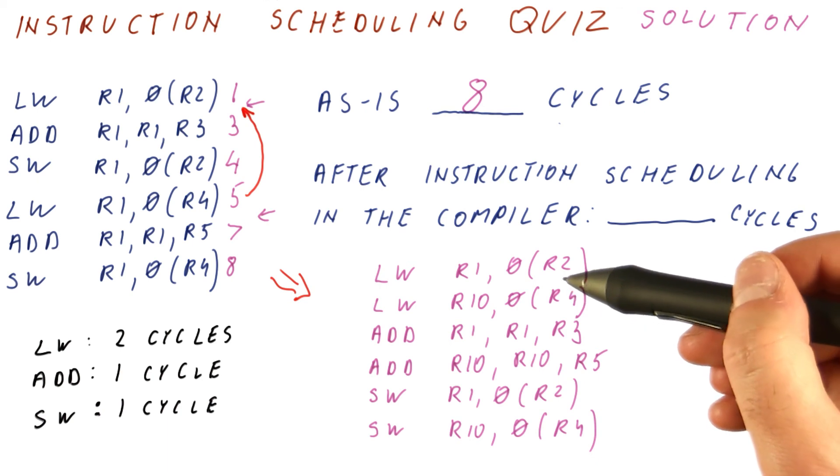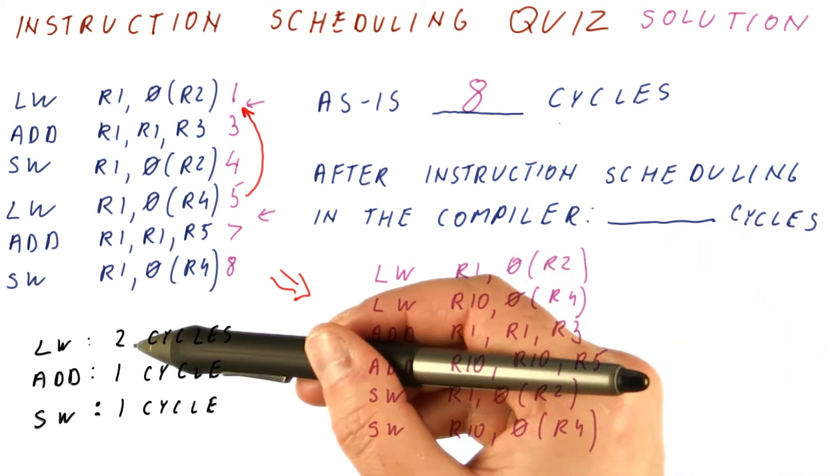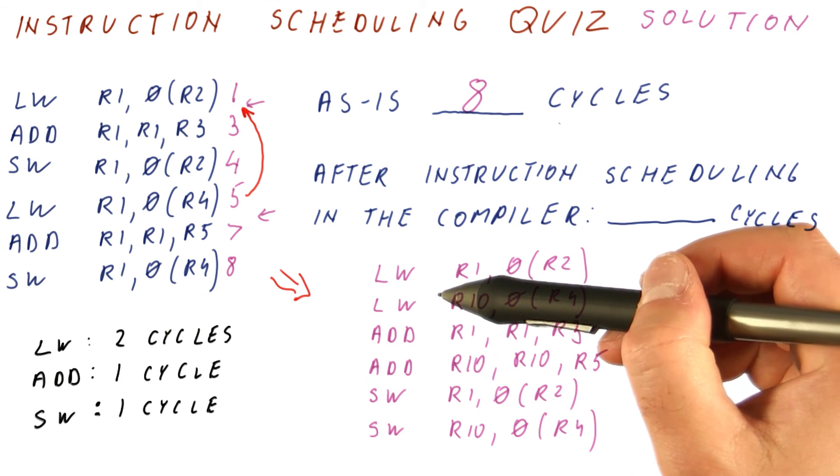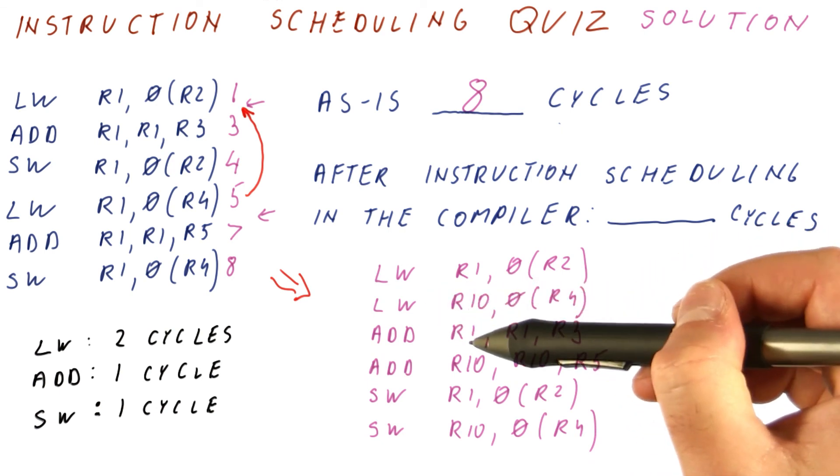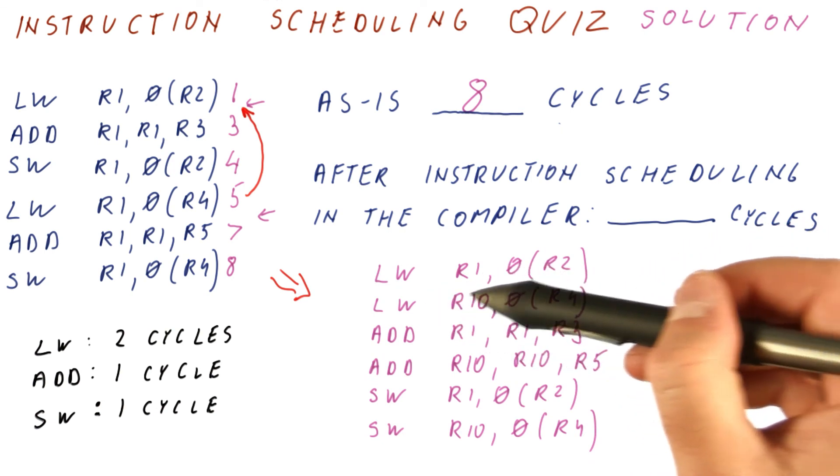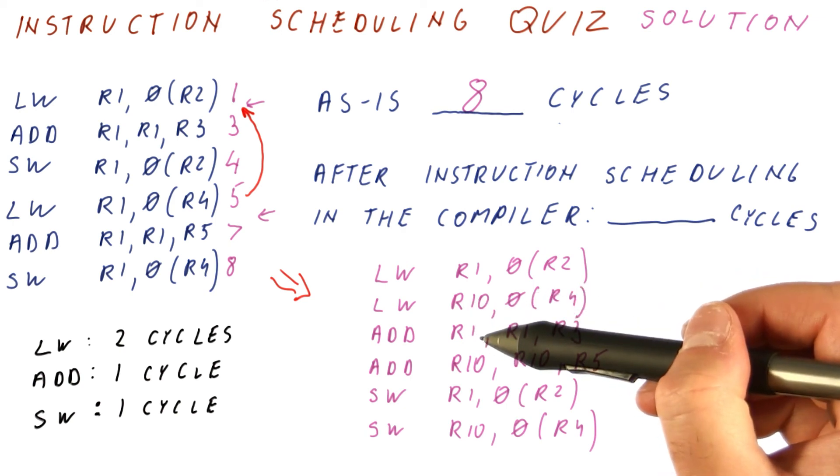As you can see, now we have a processor where whenever we need two cycles for the load, there is something in between the load and the use of its result. Here, R1 is loaded, we don't use R1, and then we add to it.